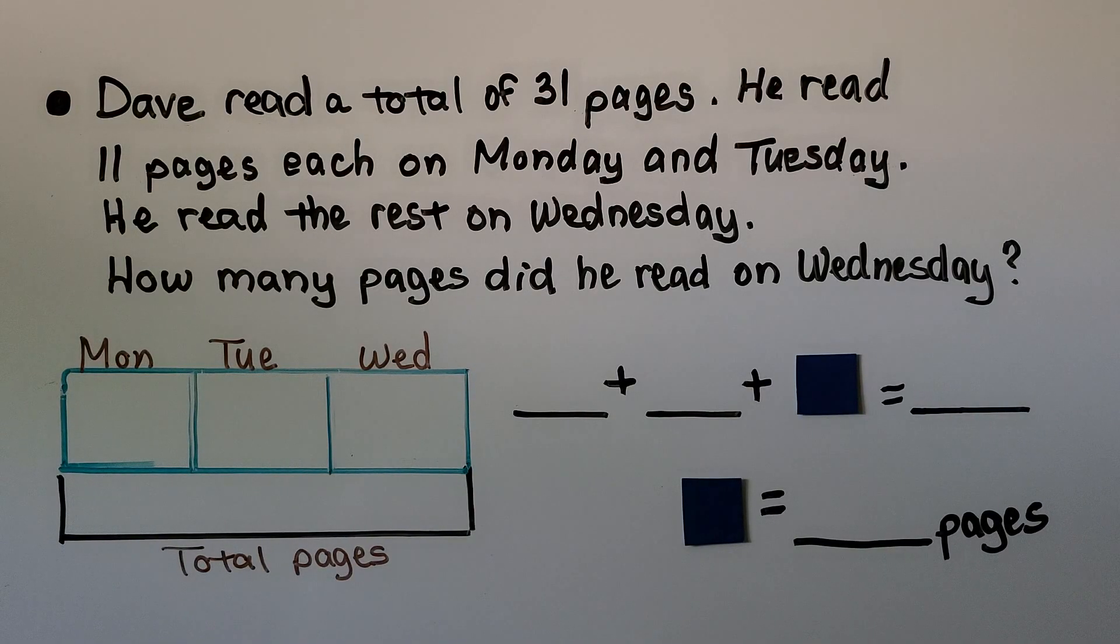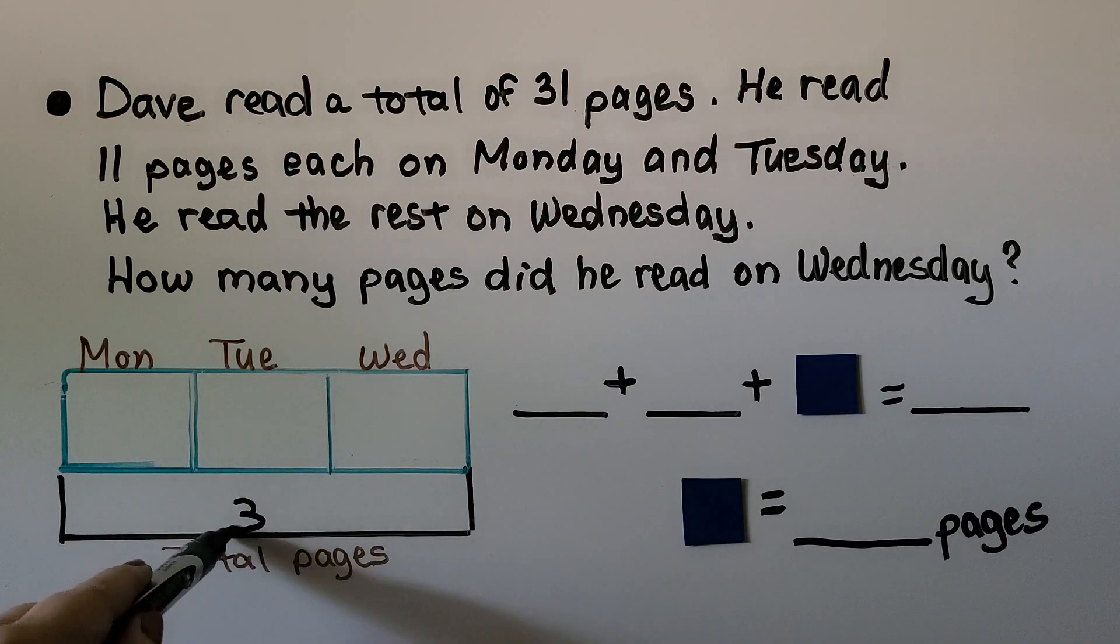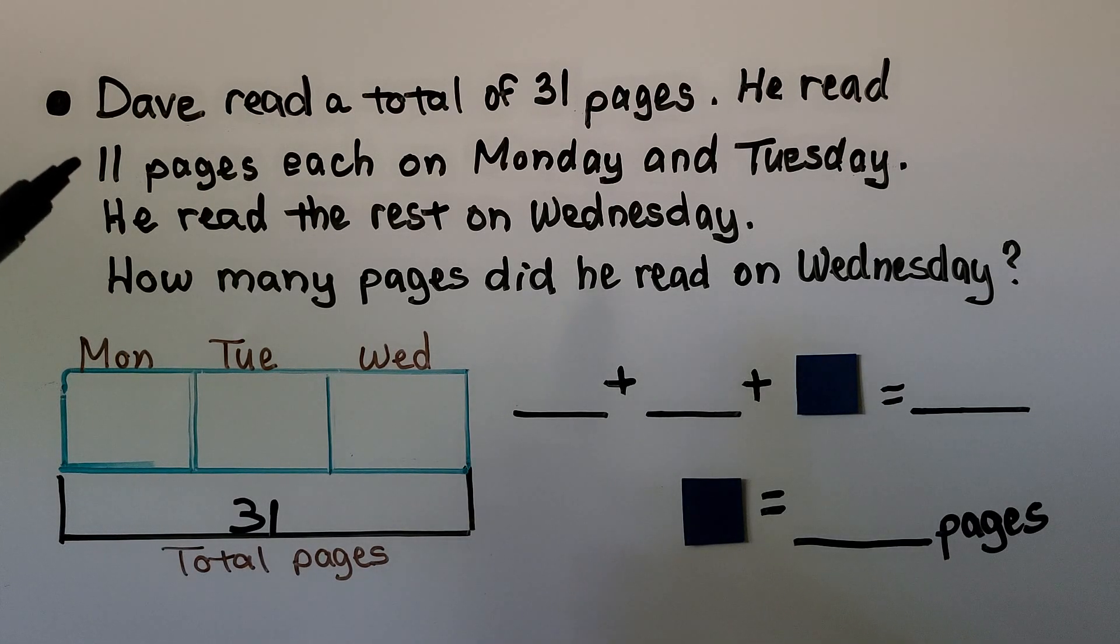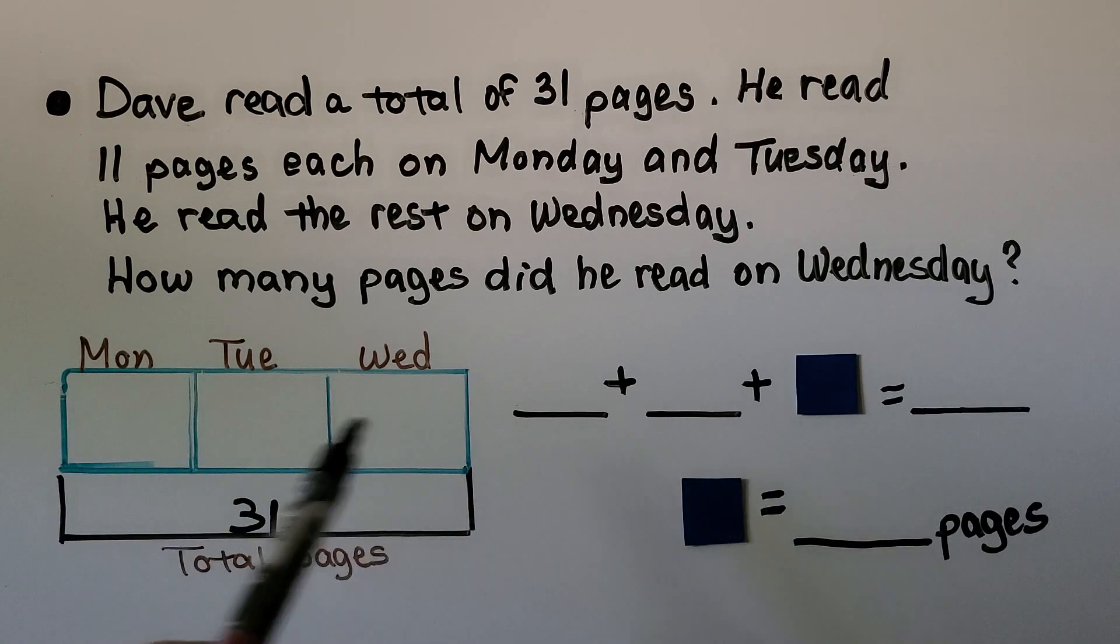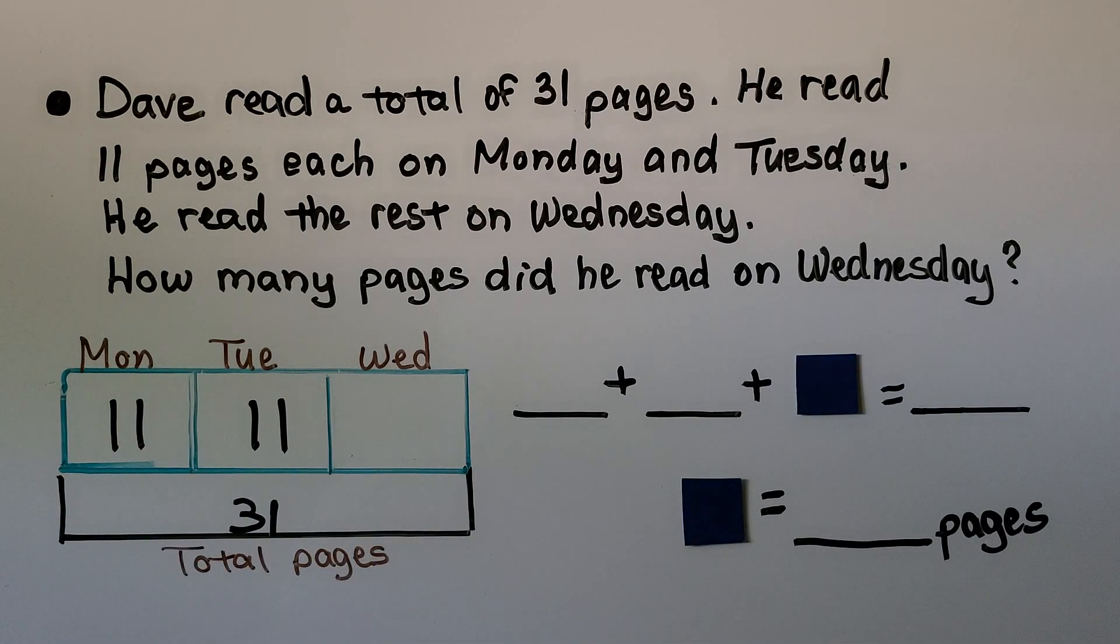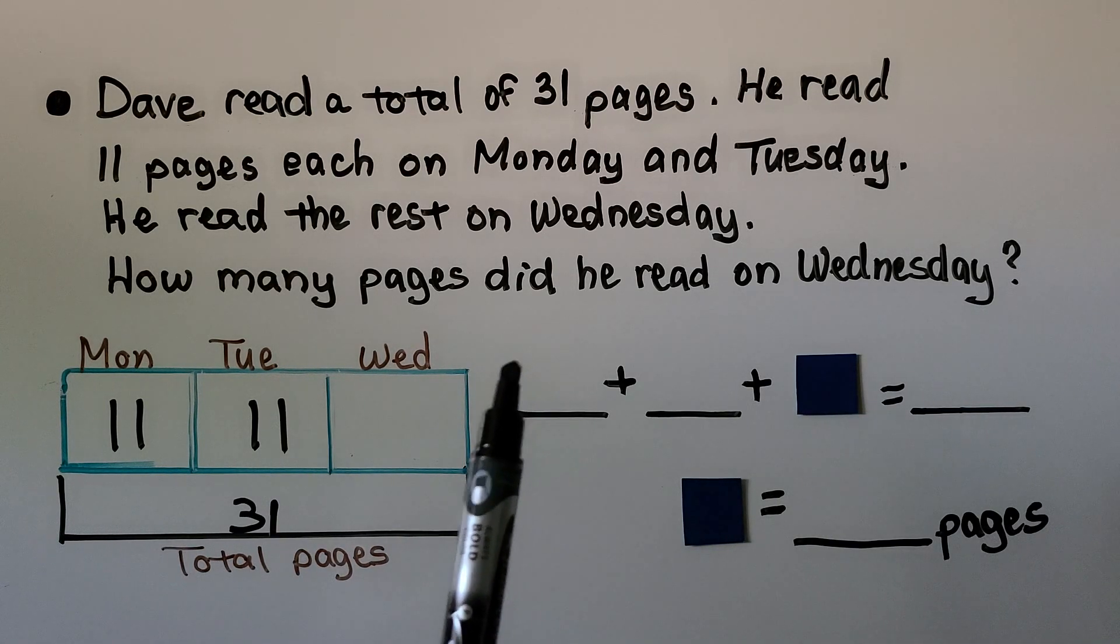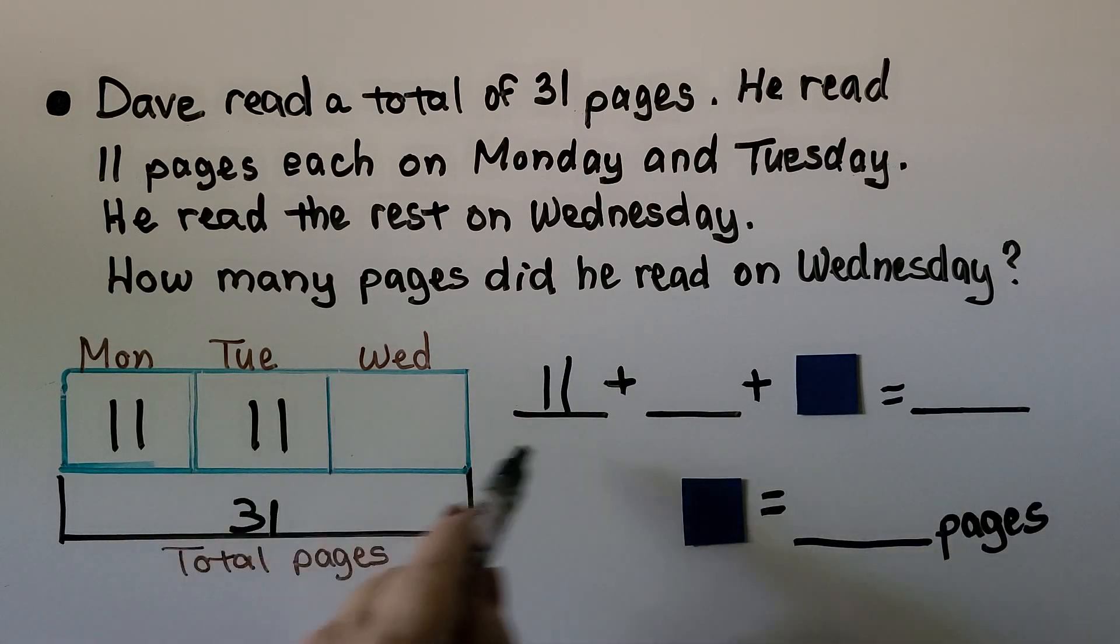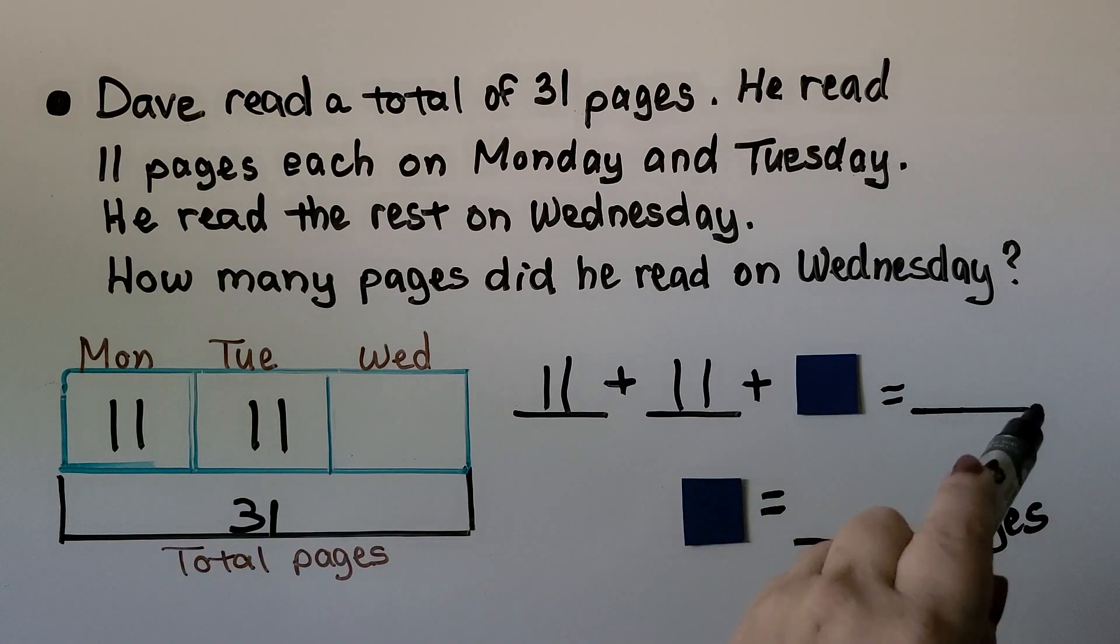Dave read a total of 31 pages. He read 11 pages each on Monday and Tuesday. He read the rest on Wednesday. How many pages did he read on Wednesday? We know he read a total of 31. We know he read 11 pages each on Monday and Tuesday. So our bar model has 3 boxes here. He read 11 on Monday and 11 on Tuesday. We need to find Wednesday. So our number sentence, our equation is 11 plus 11 plus some number equals 31.